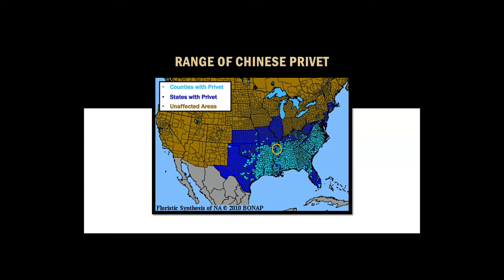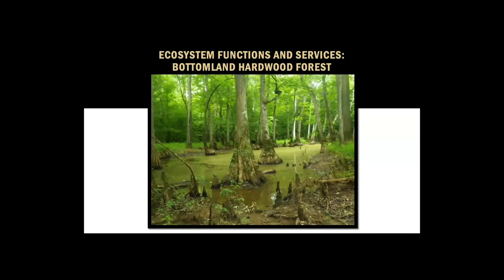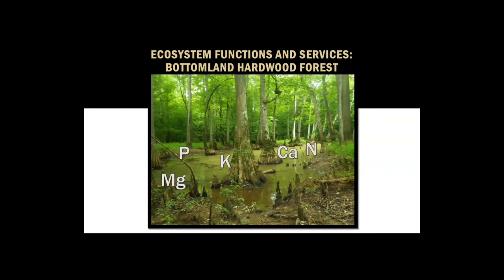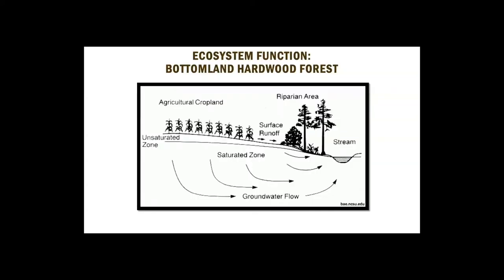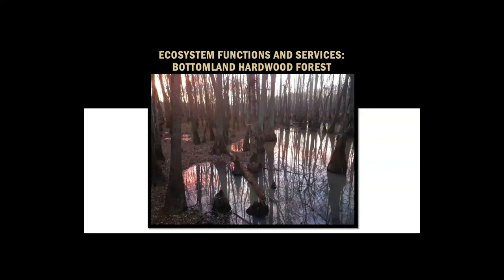The main habitat surrounding the river is bottomland hardwood forests. When we're talking about restoration, we want to consider the ecosystem functions and services we want to restore. Bottomland hardwood forests are also known as forested wetlands because they experience frequent flooding and most of the trees are hardwoods — like oaks, hickories, and tupelos, as we see in this photo. These forests sequester nutrients, sequester sediments, filter groundwater, and create habitats for a wide diversity of endemic plant and animal species.